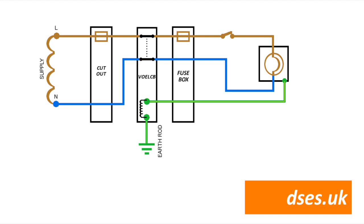And you can see that the earth passes back through the main earthing terminal in the fuse box and to the coil of the VOELCB via the F or frame terminal. On the other side of the coil is the E terminal we saw earlier, which connects to earth via the rod.